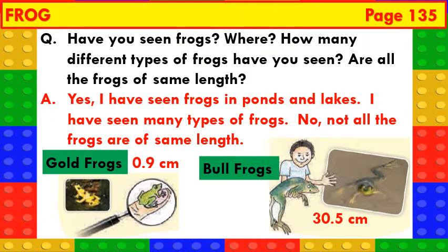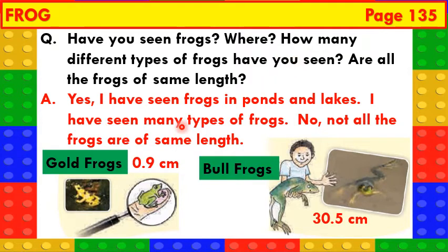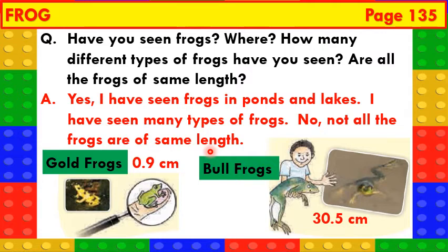Now, we will measure the length of frogs. Children, have you seen frogs? They mostly appear in the rainy season, isn't it? I have seen them in ponds and lakes. There are different types of frogs. How many different types of frogs have you seen? I have seen many kinds of frogs. Are all the frogs of the same length? No, not at all. All the frogs are of different length. Children, we all are also of different heights — some are short, some are tall, some are medium. Everyone's height is different.